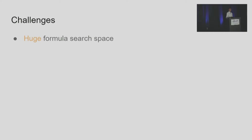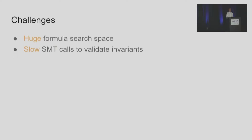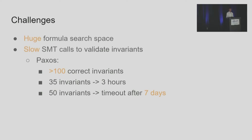The first challenge is the huge formula search space. For the simple consensus protocol, there are 35,000 candidate formulas if we consider formulas up to four terms. The second challenge is the slow SMT calls. To validate an invariant is correct, we have to call an SMT solver, and these SMT queries can be prohibitively expensive. For the Paxos protocol, there are more than 100 correct invariants. If we want to prove 35 of them are correct and throw them to an SMT solver, it will take three hours to complete the query. And if we throw 50 invariants to an SMT solver, it will time out after seven days.